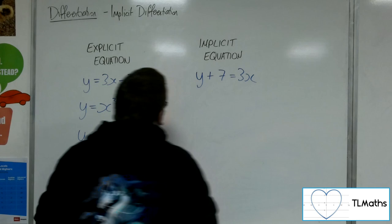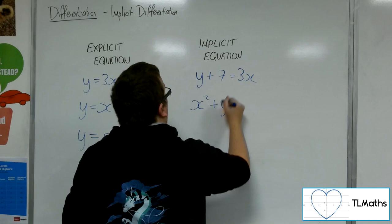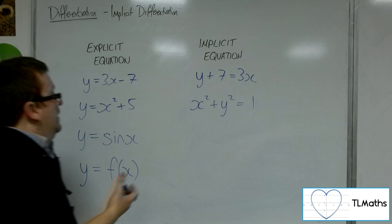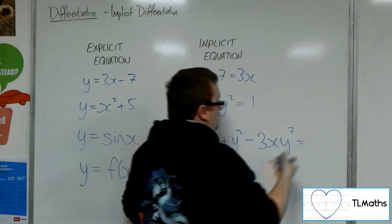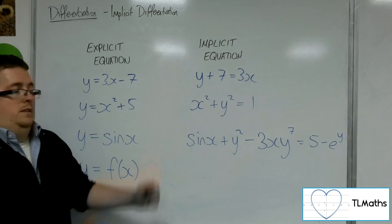And there are other ones that we've come across that would be written this way. So, for example, x squared plus y squared equals 1, the equation of a circle centered at the origin with radius 1. And you can go to town on this. You could have sin x plus y squared minus 3xy to the 7 equals 5 minus e to the y. Something like that. But there is another equation. It is implicit.